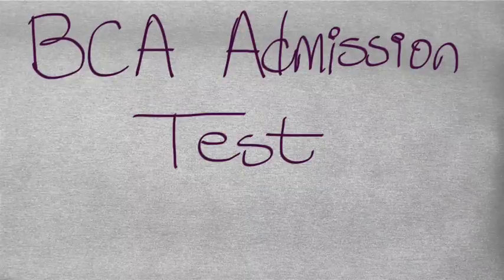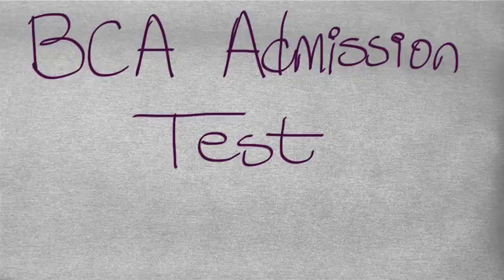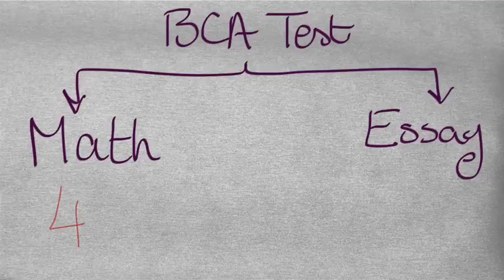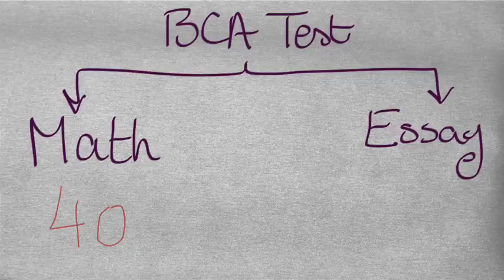The Bergen County Academy admission test is a very important exam. It is one of the main factors that will determine whether or not you will be accepted to the academies. The test has two sections, math and English. The math section is a 40 question multiple choice exam that you have to answer in one hour without using a calculator.